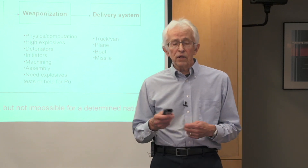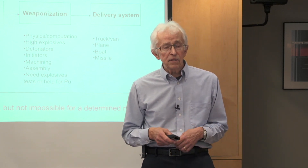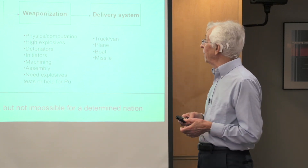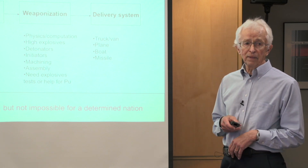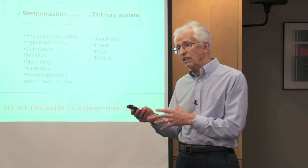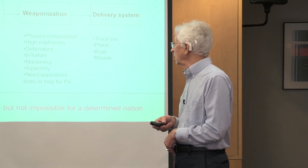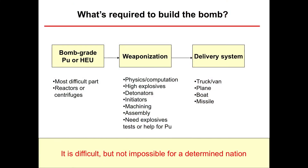Before I tell you how North Korea pursued the bomb, I'm going to tell you a little bit about what's required to build the bomb. There are essentially three different aspects to building the bomb. The first one is making the bomb fuel — that's the fissionable material, the stuff that you can split. There are basically two bomb materials: plutonium and highly enriched uranium.